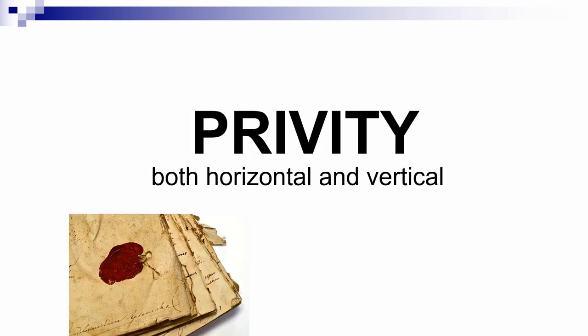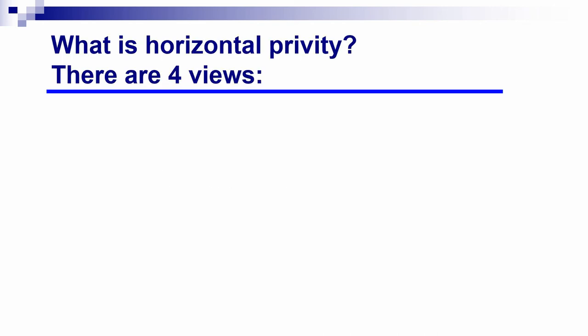The third requirement for a covenant to run with the land at law is privity of estate, and there are two kinds: horizontal and vertical. I want to caution you that these are strictly technical requirements — they don't really make any policy sense at all. The point is simply to learn the rules and apply them because that's what the courts do. Horizontal privity is a relationship between the original parties to the covenant — it either exists or doesn't exist the moment the covenant is entered into, and it can't be created later.